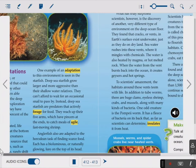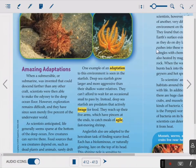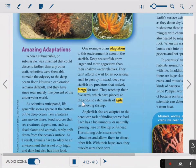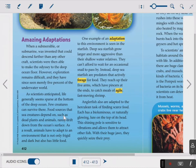When a submersible or submarine was invented that could descend farther than any other craft, scientists were then able to make the odyssey to the deep ocean floor. Another word for odyssey's journey, ladies and gentlemen. However, exploration remains difficult, and they have since seen merely 5% of the underwater world. As scientists anticipated, life generally seems sparse at the bottom of the deep ocean. Few creatures can survive there. Food sources that sea creatures depend on, such as dead plants and animals, rarely drift down from the ocean's surface. As a result, animals have to adapt to an environment that is not only frigid and dark, but also has little food.